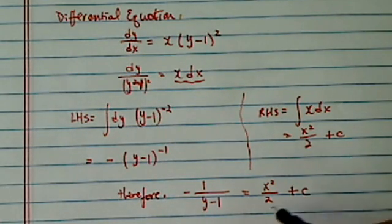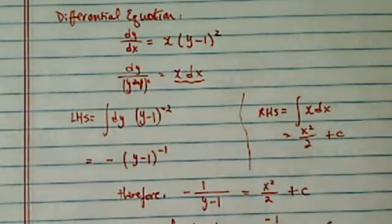Now having done this one, we can use the initial condition that f of 0 is equal to minus 1. So we have minus 1 minus here, minus 1 minus 1 is equal to c, or c is equal to half.